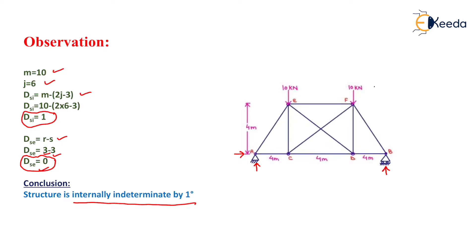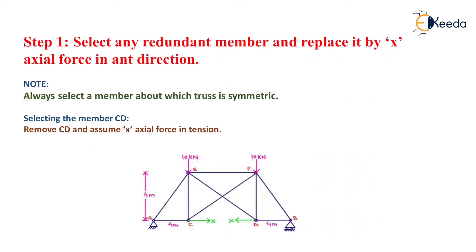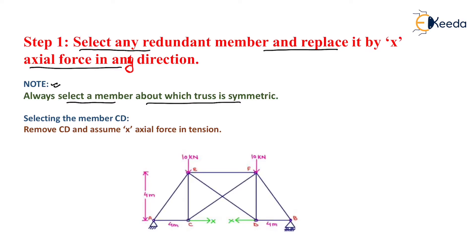Step 1 is to select any redundant member and replace it by X axial force in any direction. One important note: always select a member about which the truss is symmetric. Here the truss is symmetric about the CD member, so we will remove the CD member and replace it by X axial force acting in the tensile direction.